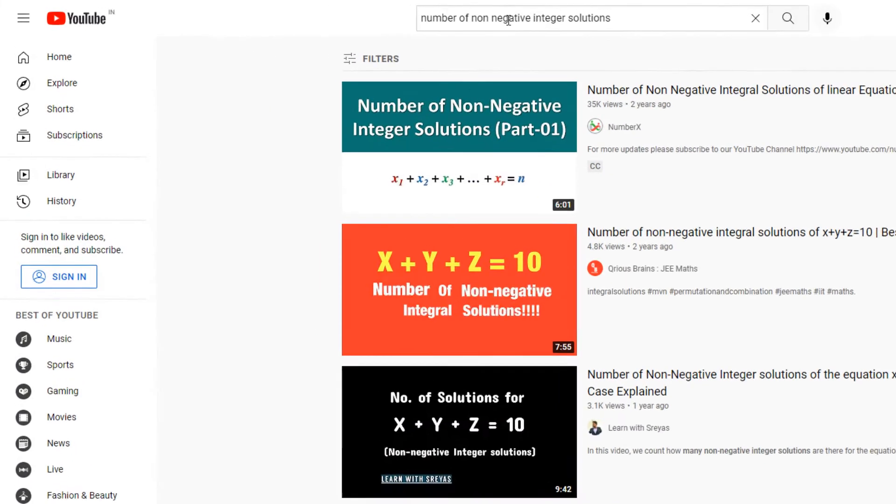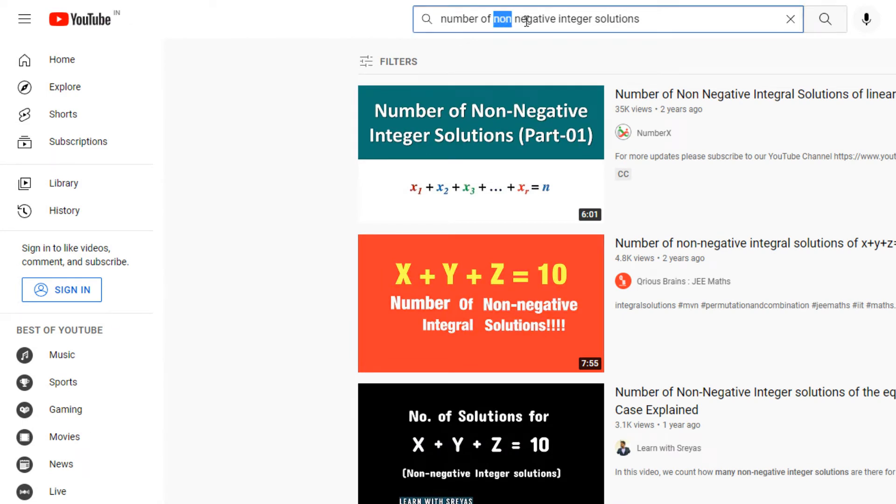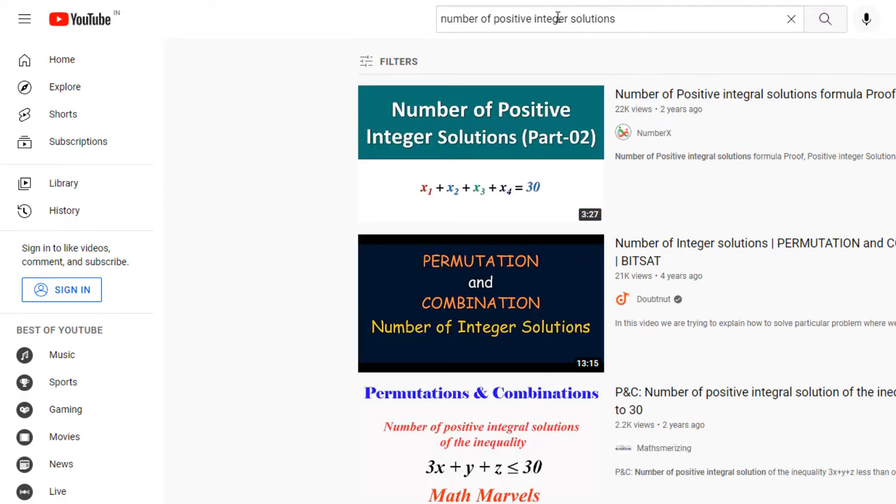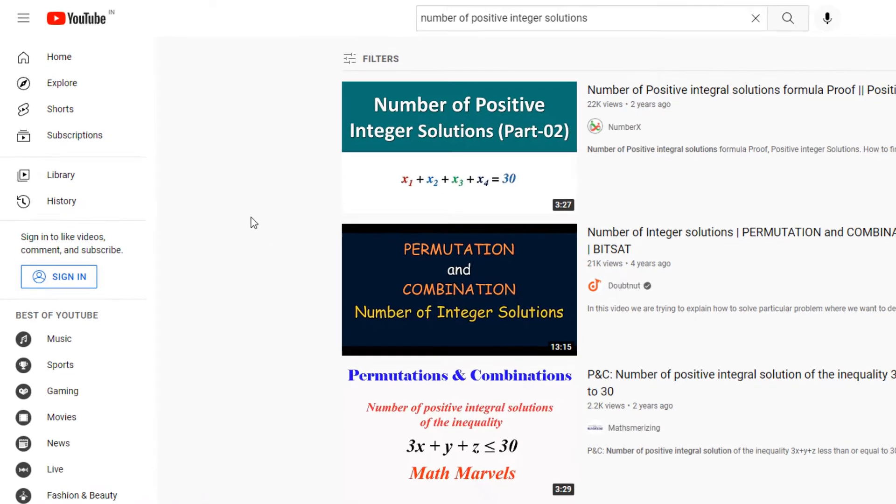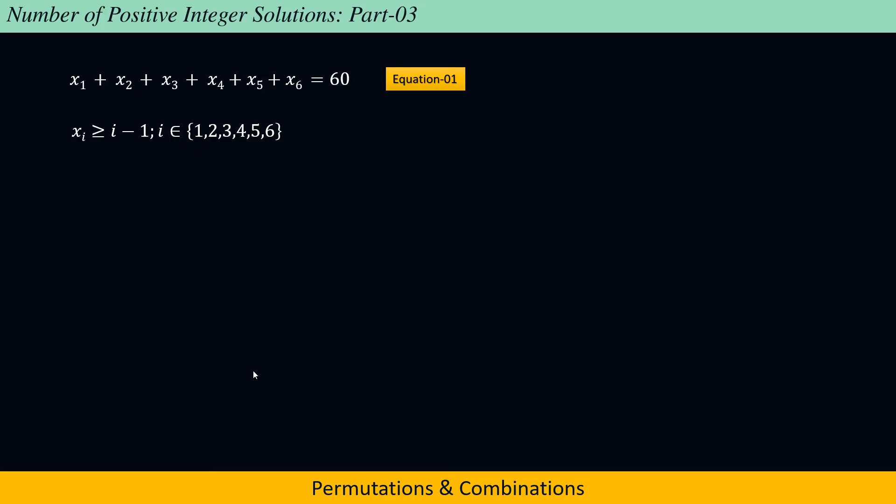To view those videos on YouTube, just search number of non-negative integer solutions for part 1 and number of positive integer solutions for part 2. The link of both videos has been given in the description box.